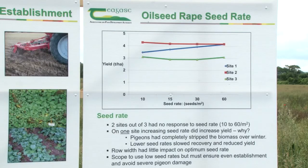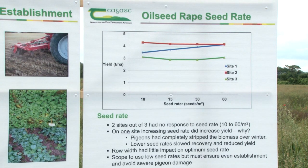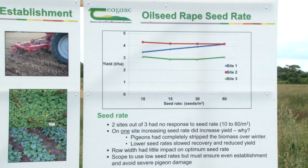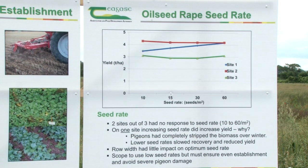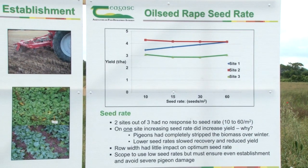All in all, for row widths especially, we saw no difference. The only issue we did see was where there's a high yield potential for a crop, the wider row width almost had a negative impact due to the fact that you had a lot more leaf and biomass, which reduced the yield overall. But in general, you can sow at any seed rate and at varying row spacings and there really won't be much difference.